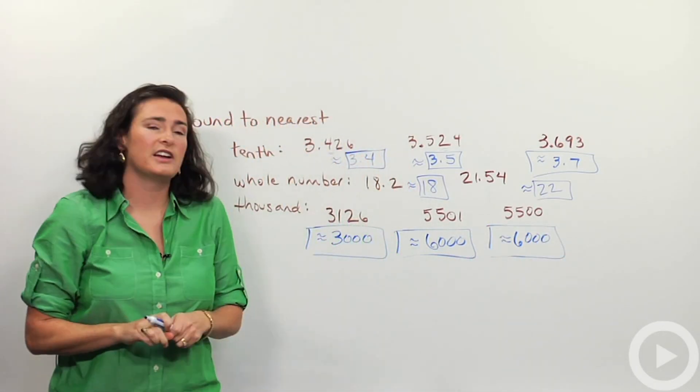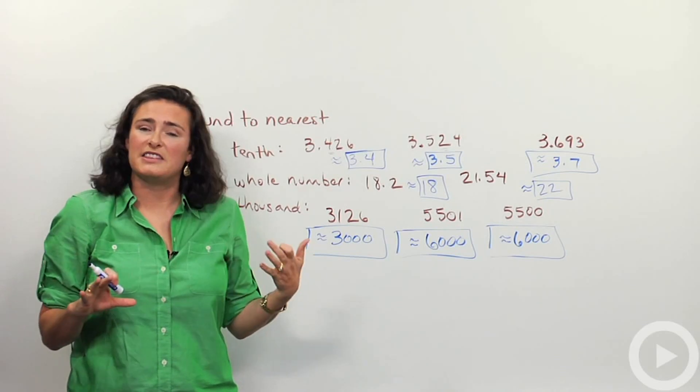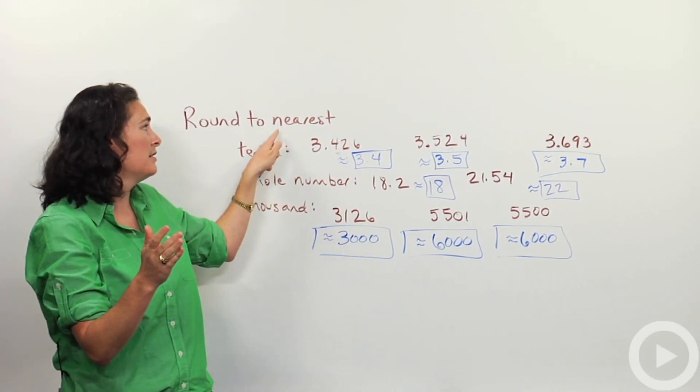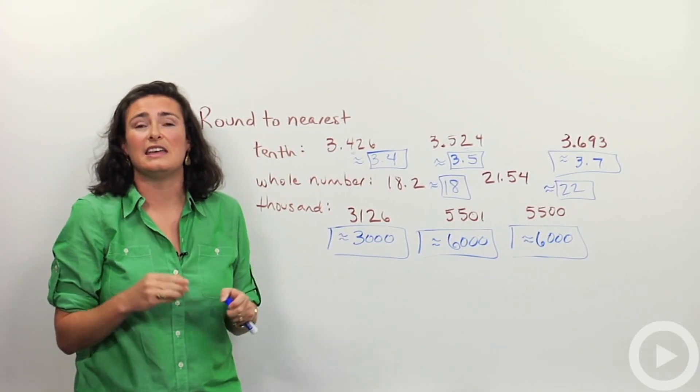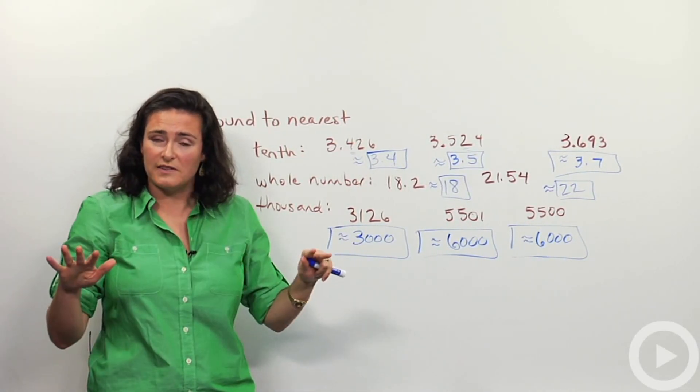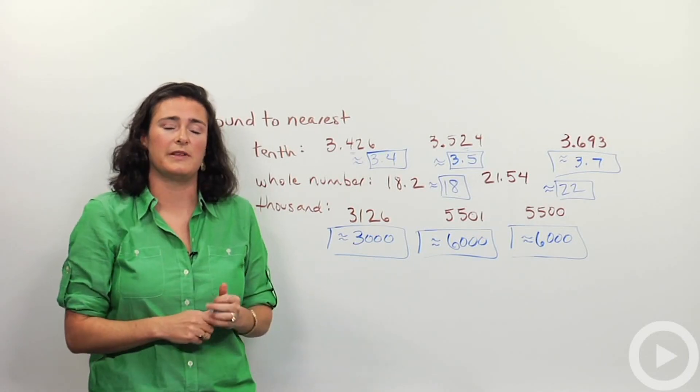So before I let you try a couple of these on your own, again, the takeaway rule for rounding is if the number next to your indicated tenths value is five or higher, you round up. If it's from zero to four, you leave it as it is. You just kind of truncate it or stop that number.